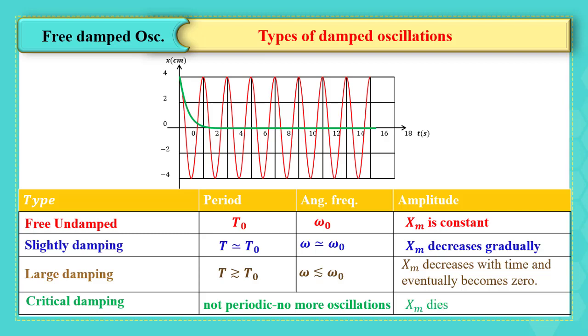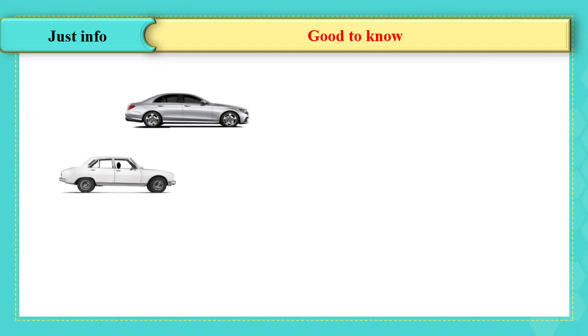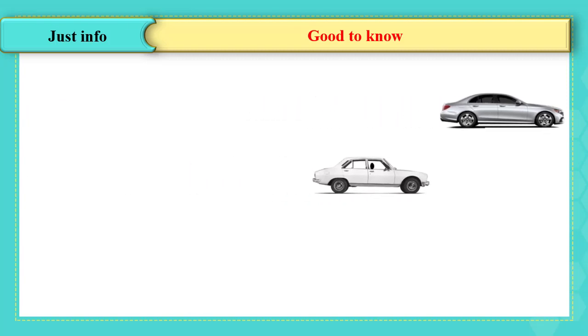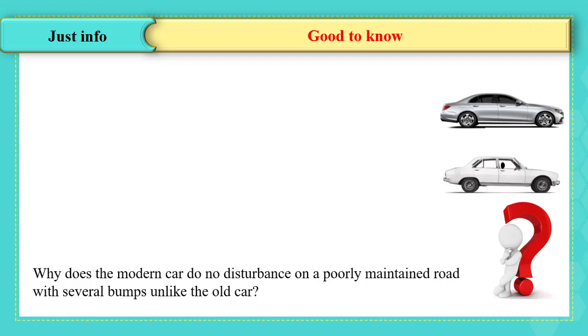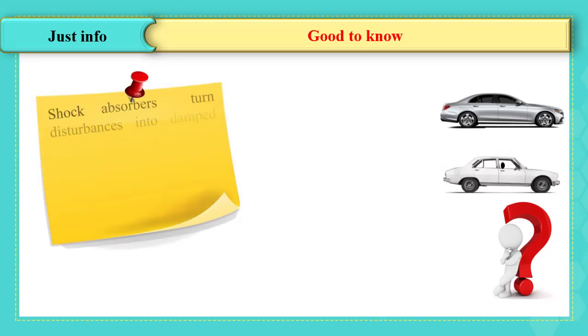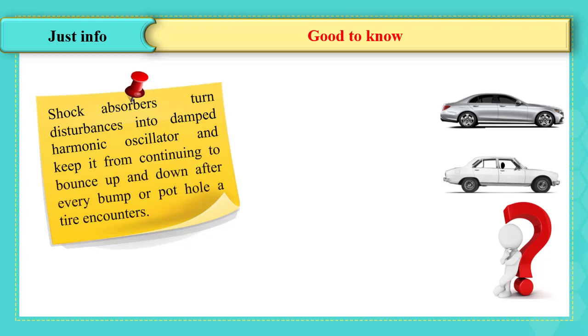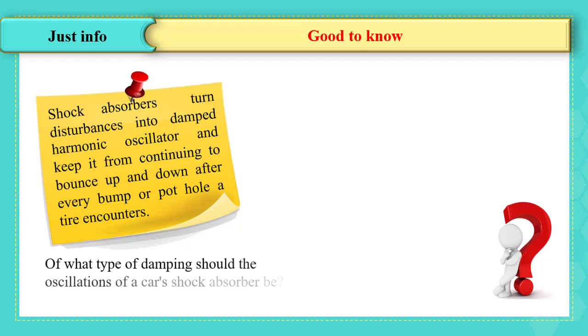After defining these forms of damping oscillations, it's good to know some information. Do you remember the question we have asked in the first video? It is the time to answer it. In cars, there are shock absorbers that turn it into a damped harmonic oscillator and keep it from continuing to bounce up and down after every bump or pothole a tire encounters. This makes riders feel more comfortable, of course.